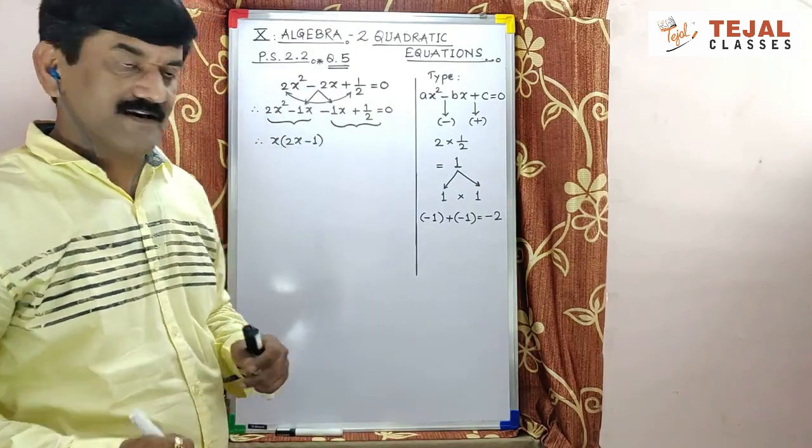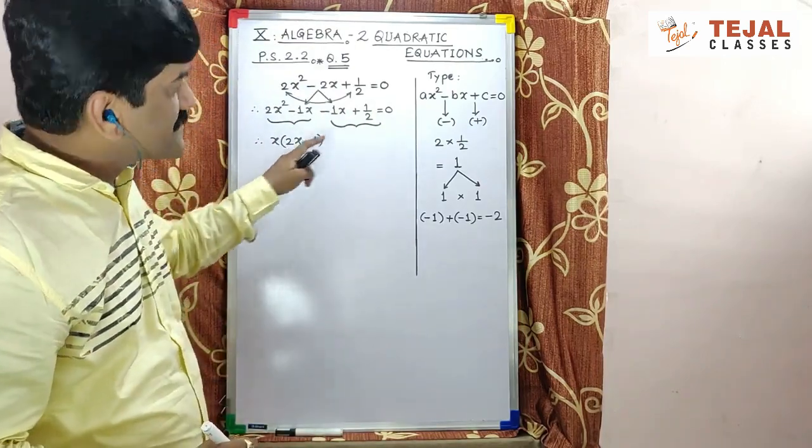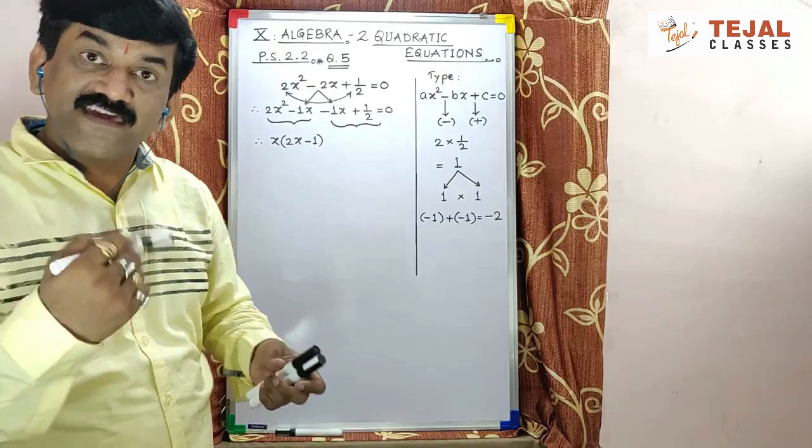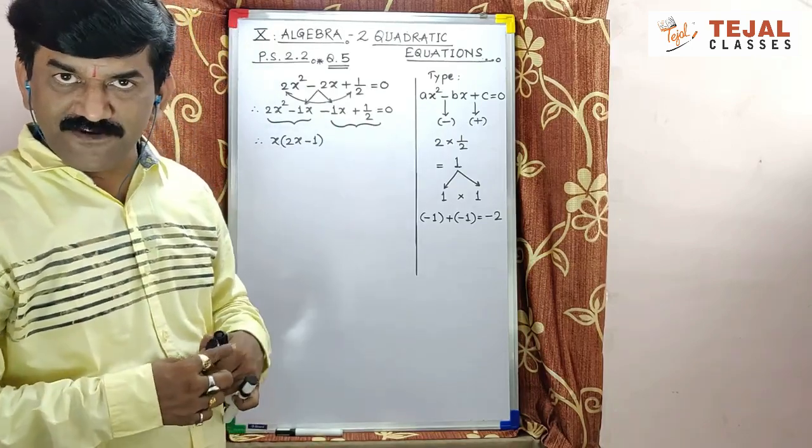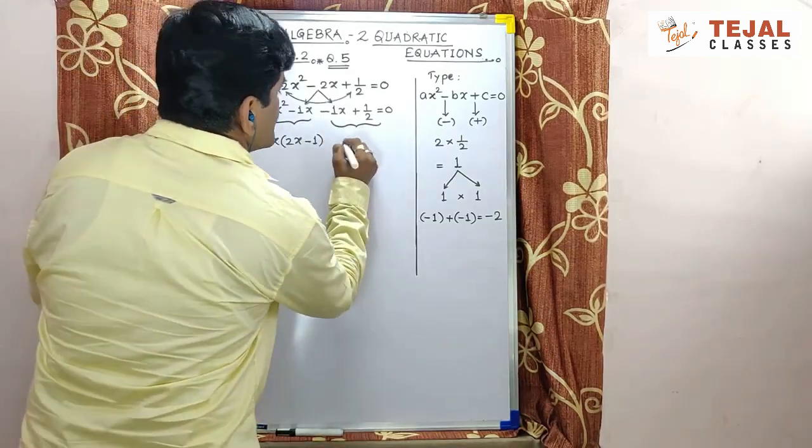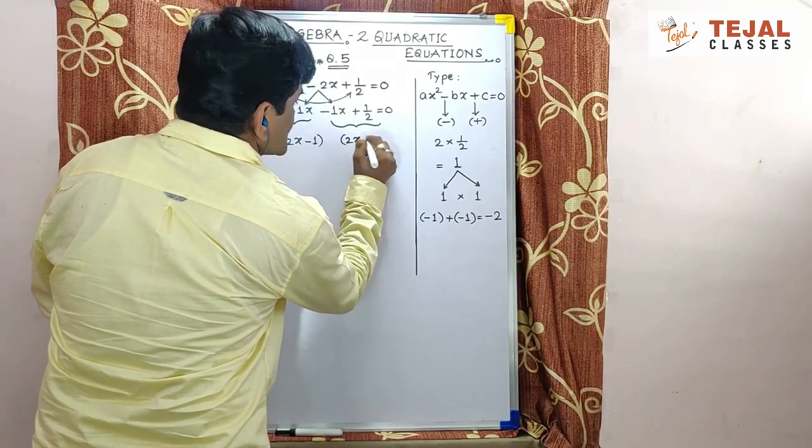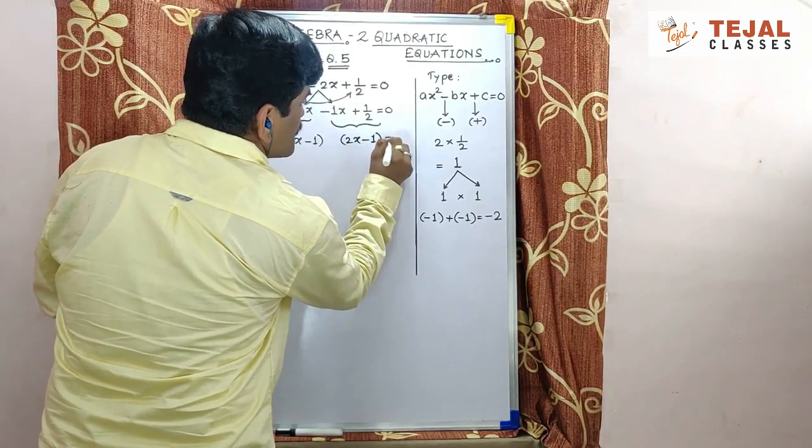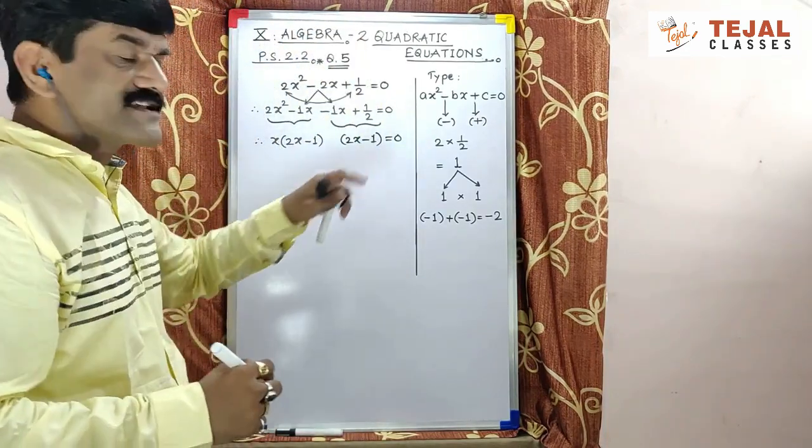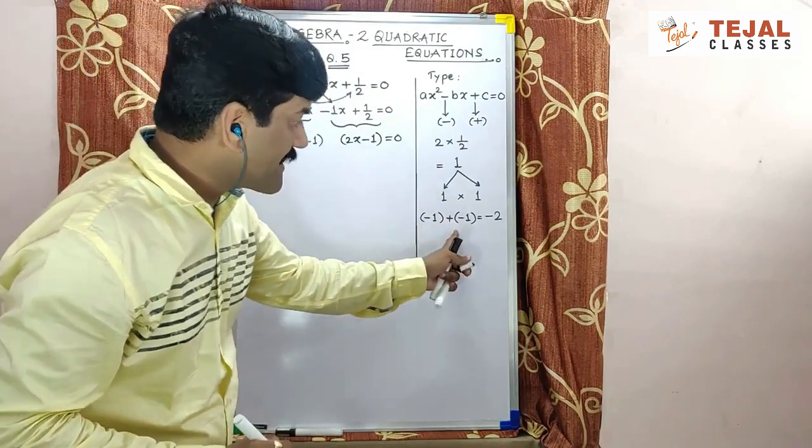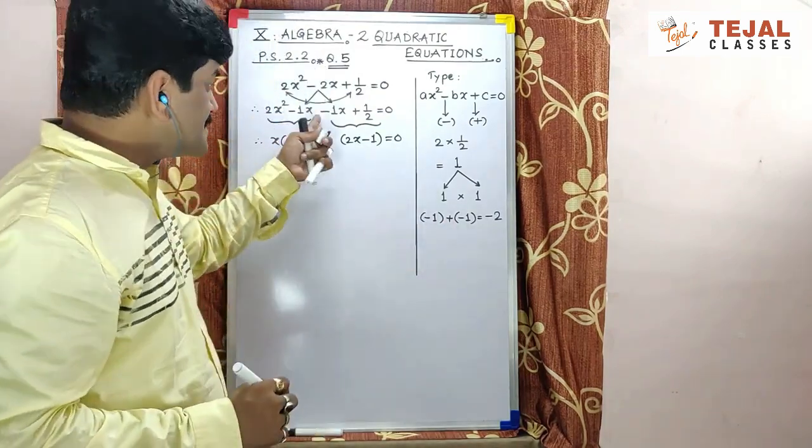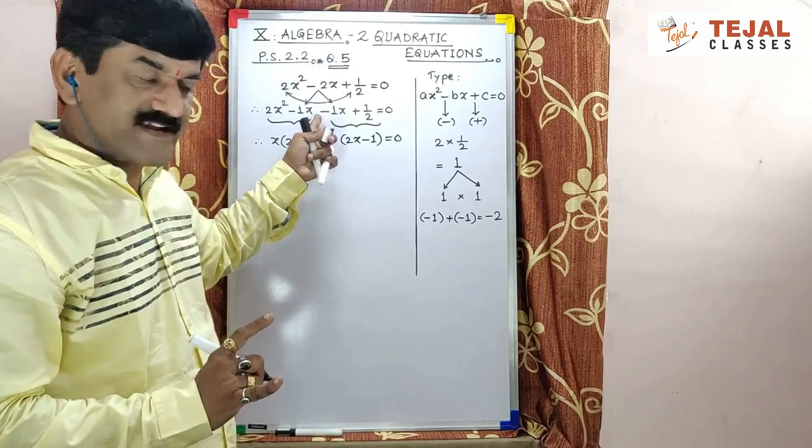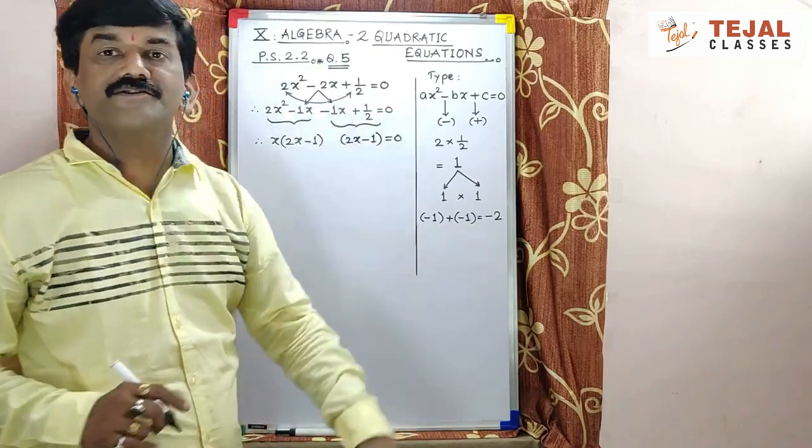Maine pichle video mein bhi bataya tha. Jo bracket yaha pe aata hai, wohi common aayega. Wohi repeat hoga. Agar wohi repeat hota hai, matlab mujhe aise likhna hai. Yaha pe aayega 2x minus 1 which is equal to zero. Same bracket will repeat over here. Mere agar factors correct hai, adjustment factors ka wohi correct hai. Toh ye bracket yaha pe repeat hota hai.